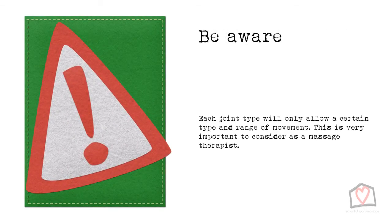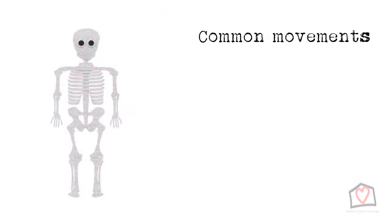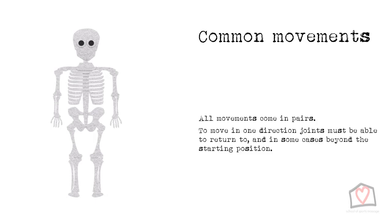Each joint type will allow a certain type and normal range of movement. These are important to consider as a massage therapist, as they can inform your treatment, indicating perhaps if someone is very tight with a reduced range. Do be aware that each individual may not achieve the considered normal range due to factors including age, gender, or previous injury. All movements come in pairs — in order to move in one direction, they must be able to return to, and in some cases beyond, the starting position. Muscles can only pull; they cannot push.